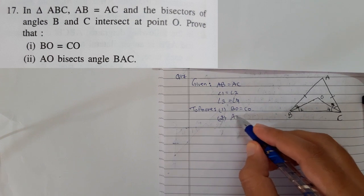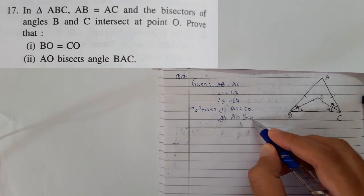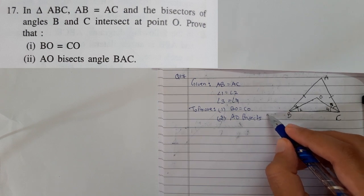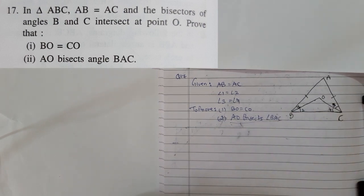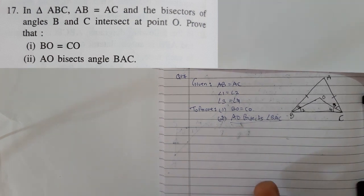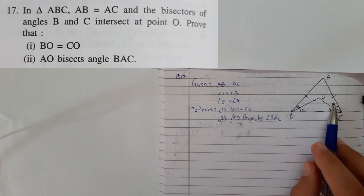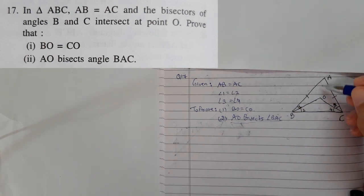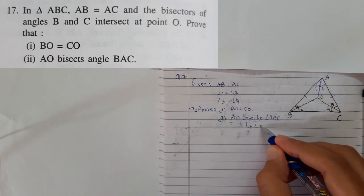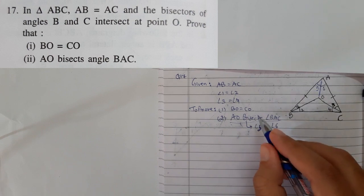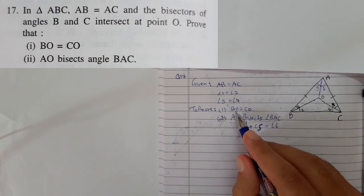The second part is AO bisects angle BAC. See, we cannot interpret unless and until we interpret this in mathematical terms, it is of no use. AO bisects BAC. That means we need to prove that angle BAC has been bisected by BO. That means angle 5 equals angle 6. We need to prove that. We will talk about this later. Let's focus on BO equals CO.